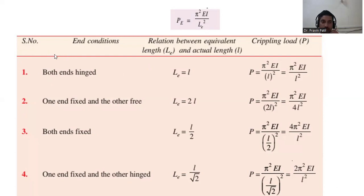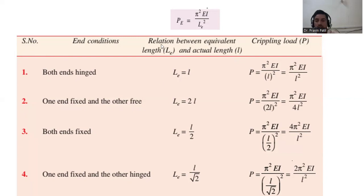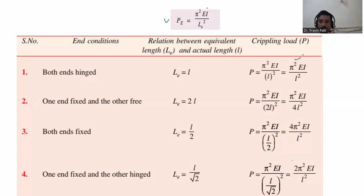These are some boundary conditions. When both ends are hinged, the relation between equivalent length and actual length is LE is equal to L. Just put the LE value in Euler's equation. It will give pi square EI divided by L square.